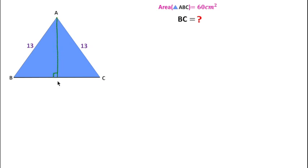Let's suppose this is point D. If we consider BC line segment as x cm, then BD length will be x over 2 and CD length will also be x over 2.